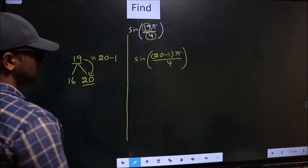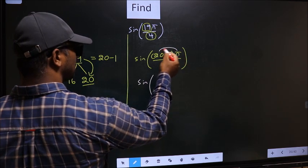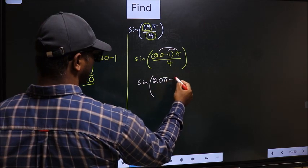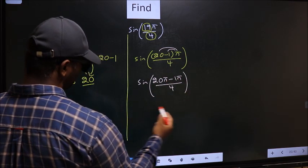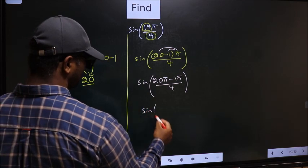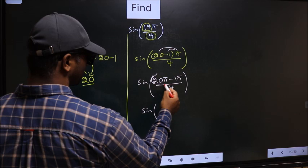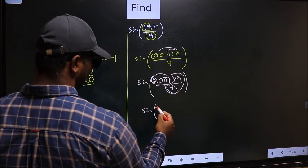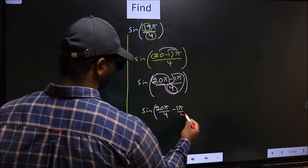Next, sin. Now you should open up the brackets. You get 20π minus 1π by 4. Now sin, you should split the denominator in this way: that is 20π by 4 minus 1π by 4.